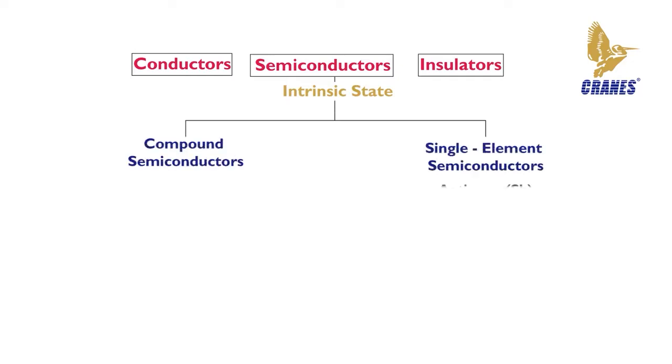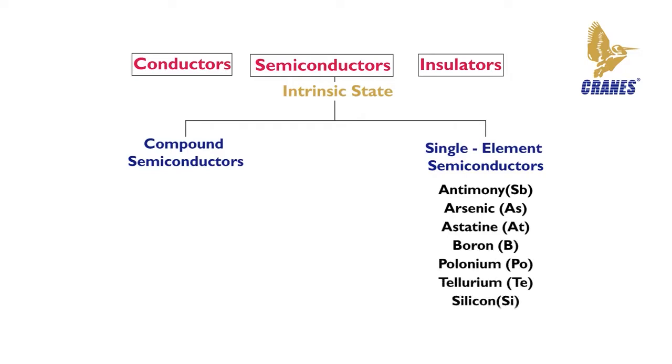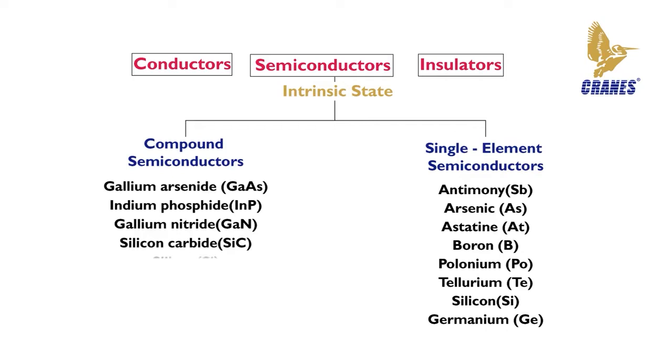Single element semiconductors are antimony, arsenic, astatine, boron, polonium, tellurium, silicon and germanium. Compound semiconductors such as gallium arsenide, indium phosphide, gallium nitride, silicon carbide and silicon germanium are also commonly used. The single element semiconductors are characterized by atoms with four valence electrons. Silicon is the most commonly used semiconductor.